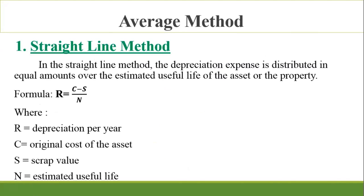There are several types of depreciation. For the depreciation average method, the first one is the straight line method. The depreciation expense is distributed in equal amounts over the estimated useful life of the asset. The formula is R = (C - S) / N, where R is the depreciation per year, C is the original cost of the asset, S is the scrap value, and N is the estimated useful life.